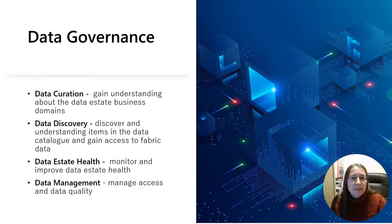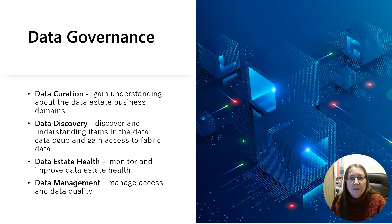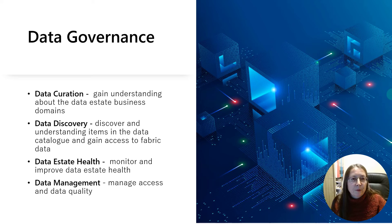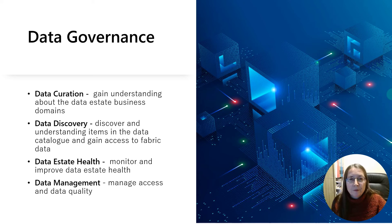Managing data governance for Fabric involves a few different elements: gaining understanding about the data estate and all the business domains; discovering and understanding data items in the catalogue and looking at those Fabric metadata items; monitoring and improving the data estate to improve its health; and general data management of access and improving data quality.